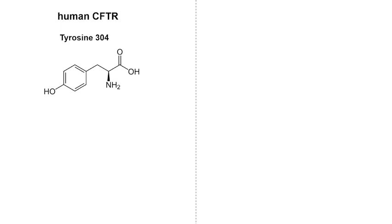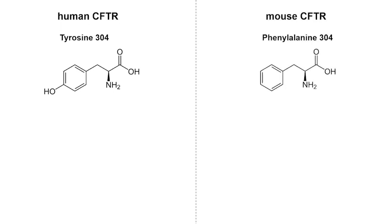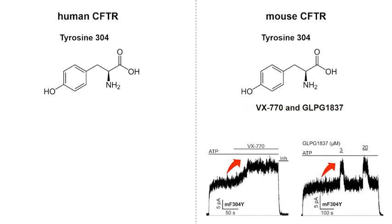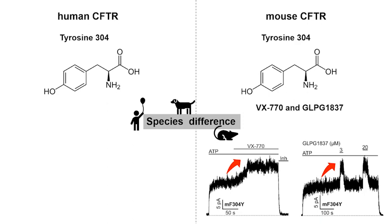Interestingly, an important role of tyrosine 304 is further supported by the following experimental results. In mouse CFTR, the amino acid equivalent to human tyrosine 304 is instead a phenylalanine. Several labs, including ours, show that mouse CFTR cannot be potentiated by VX470 and GLPG1837. However, by replacing mouse 304 with tyrosine, we can restore the effect of VX470 and GLPG1837. Future work along this line is expected to provide mechanistic insights into the species difference in the action of these potentiators.